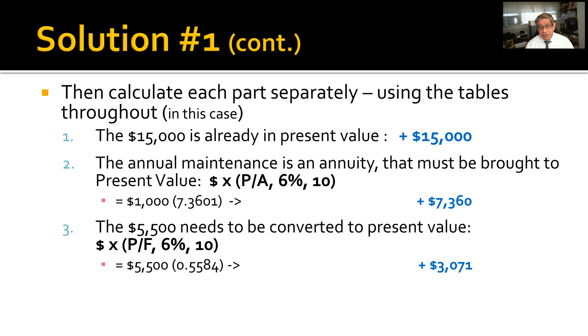Step one: The $15,000 is already in present value, so just add that in—$15,000. Step two: The annual maintenance is an annuity that must be brought to present value using the equation P/A at 6%, 10 years. That comes out to $1,000 × 7.3601 from the table, which results in $7,360. Step three: The $5,500 needs to be converted to present value, so that's P given F at 6%, 10 years—$5,500 × 0.5584 from the tables again, or $3,071.